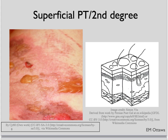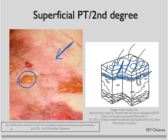A superficial partial thickness burn involves the epidermis and the superficial part of the dermis. These burns often produce thin, watery blisters. The skin is pink and very tender. These burns will heal in weeks and usually heal without scarring.